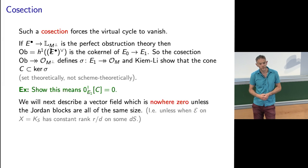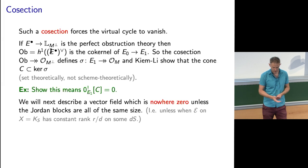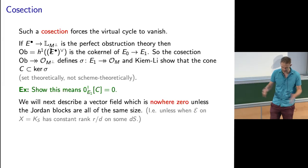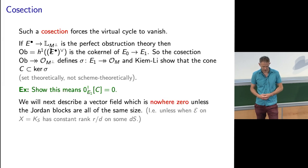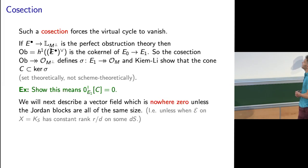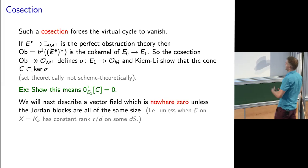That's the background. I'm going to discuss co-section localization briefly again later. More generally, when the co-section has zeros or isn't onto, you can instead localize to its zeros. Here we're going to produce a vector field which is nowhere zero, so the co-section is surjective and therefore the virtual cycle vanishes.